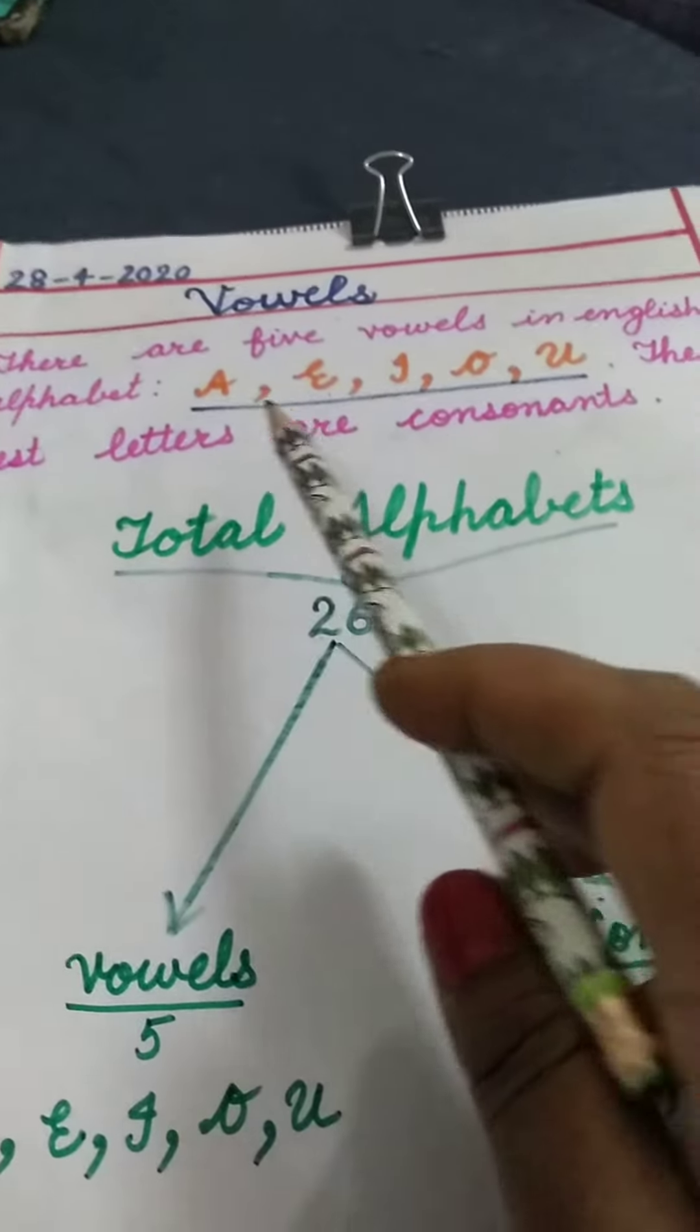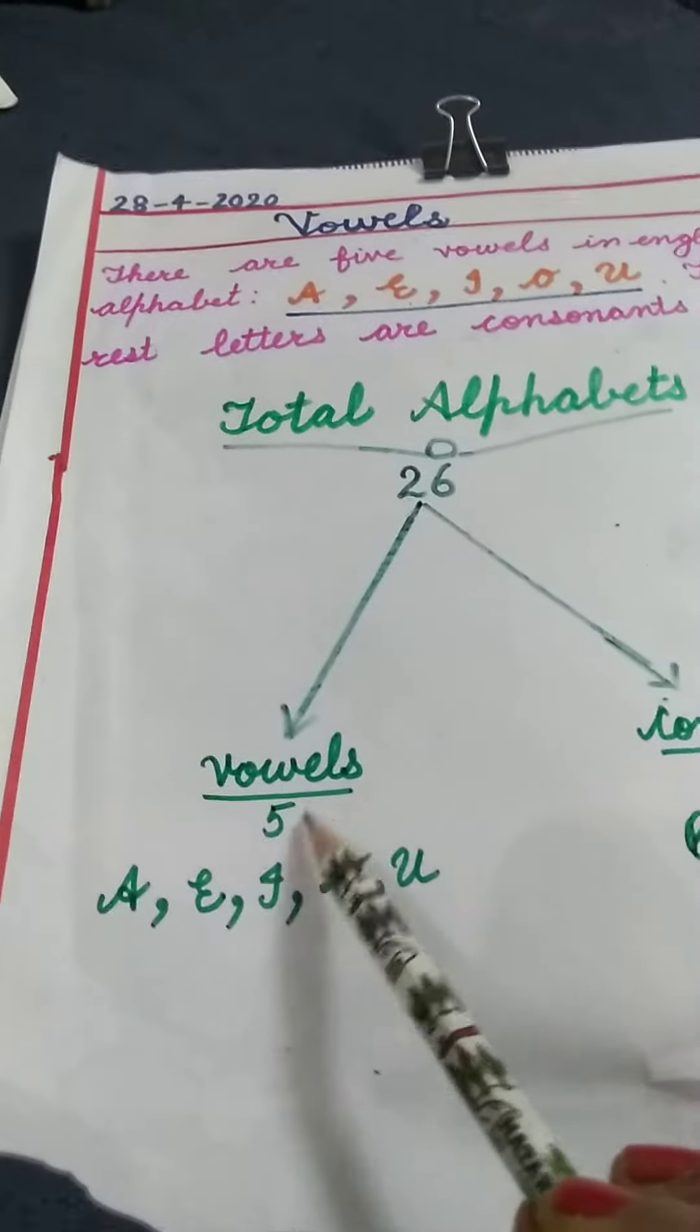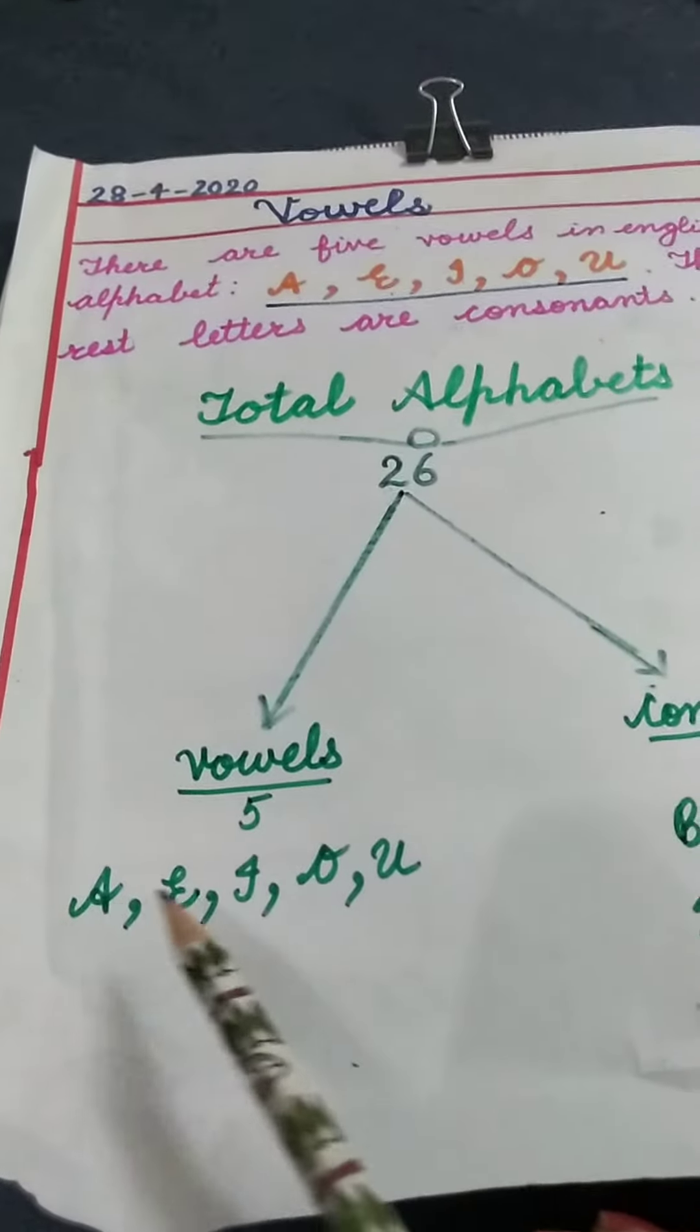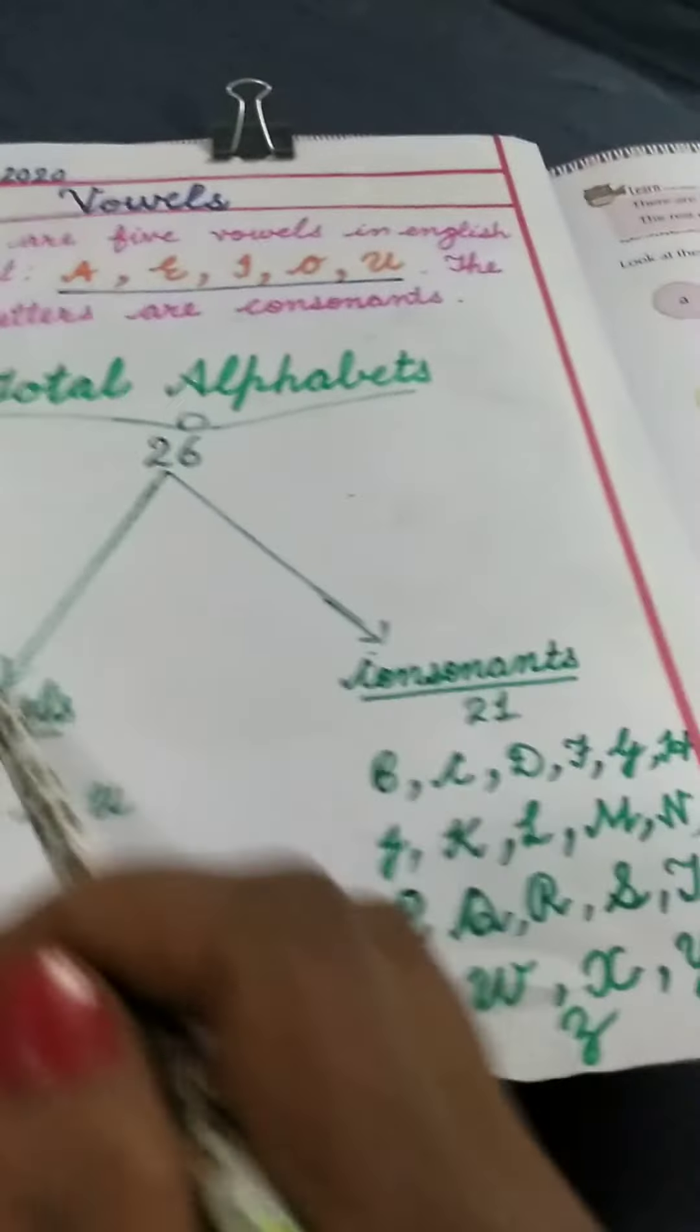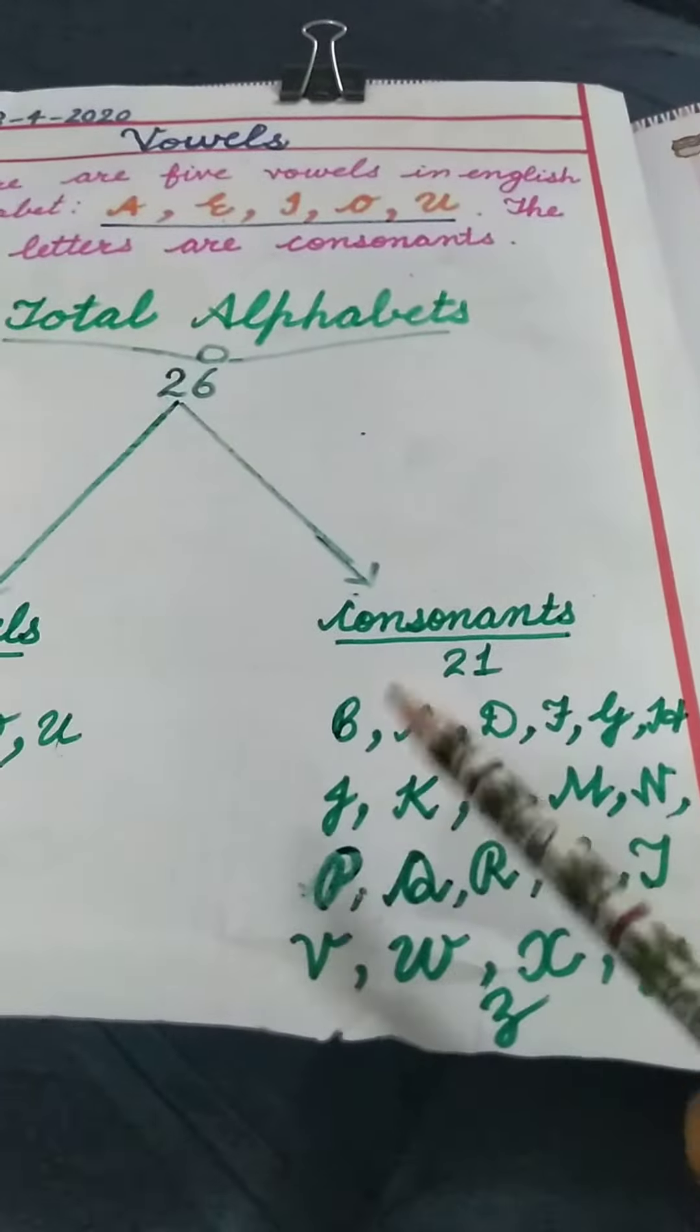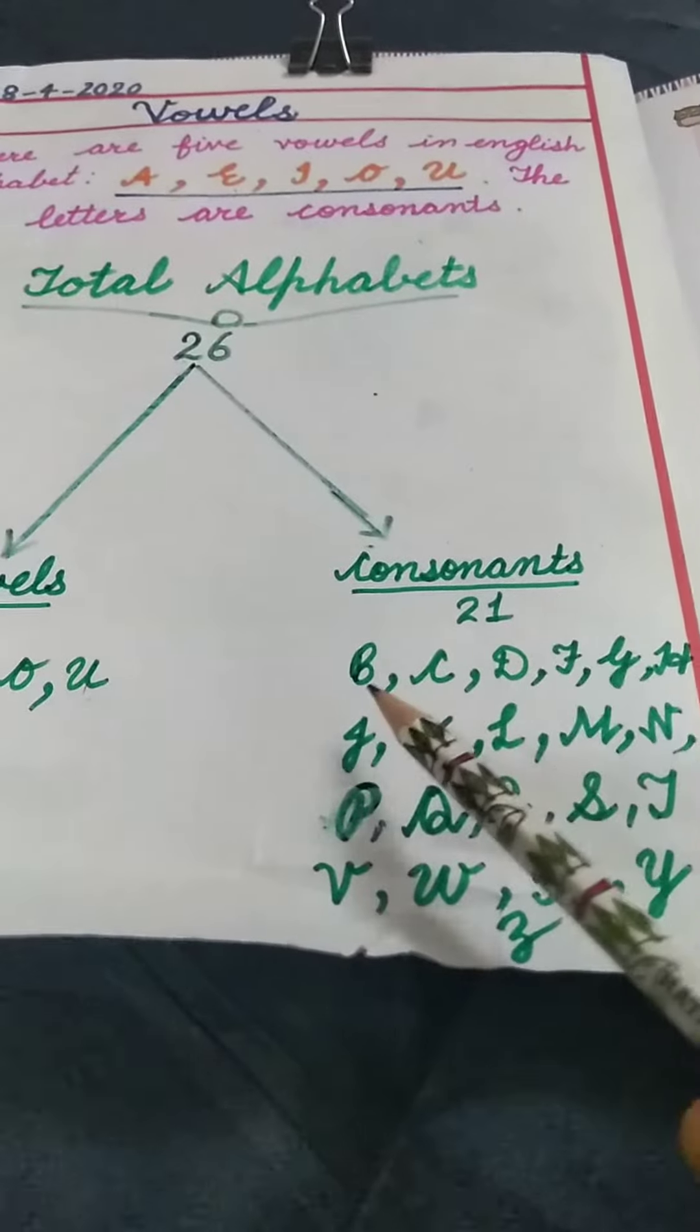These five letters—A, E, I, O, U—are vowels. And the rest of the letters that remain are consonants, such as...